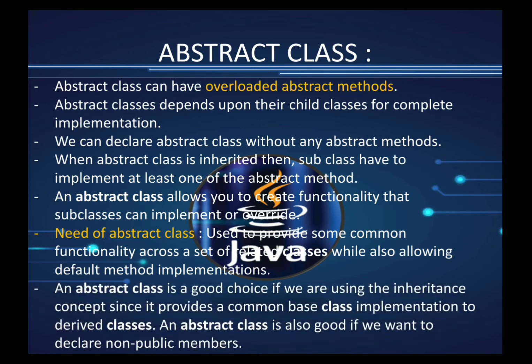An abstract class is a good choice when using the inheritance concept, since it provides a common base class implementation to derived classes — common functionalities in the form of functions that can be inherited and implemented. It is also a good choice when we want to declare non-public or private methods.